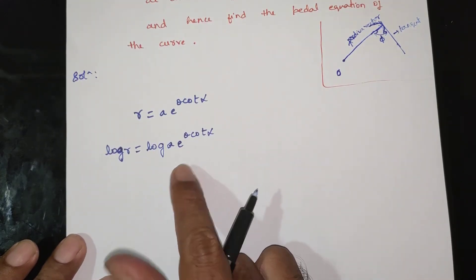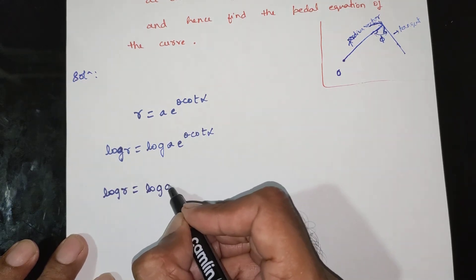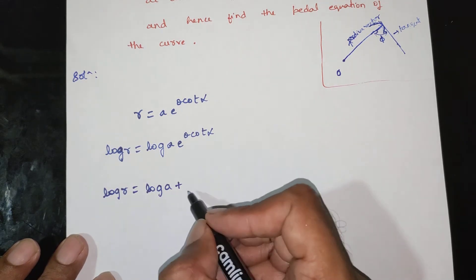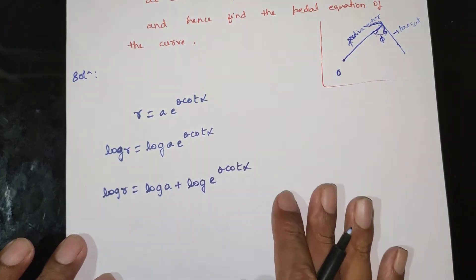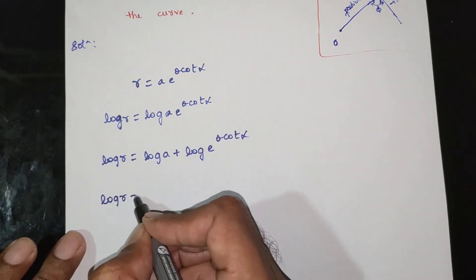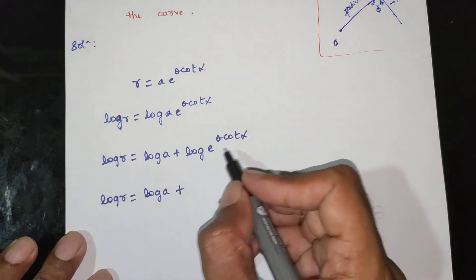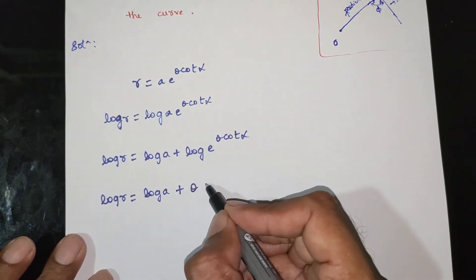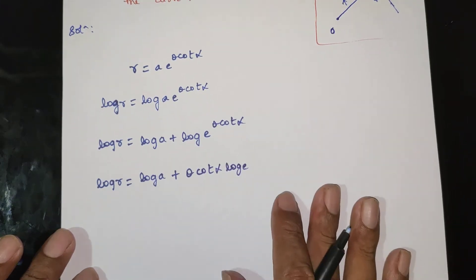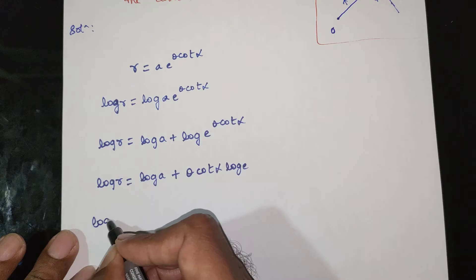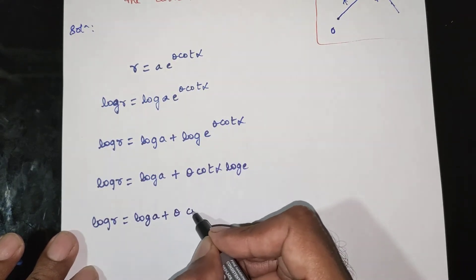Taking logarithm: log r equals log(m·n) equals log m plus log n. So log r is equal to log a plus log e power theta cot alpha, which gives log r is equal to log a plus theta cot alpha.